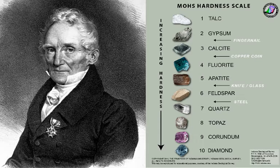Going up the scale, he used gypsum for number two, calcite for number three, fluorite for number four, apatite for number five, six was feldspar, seven is quartz, eight was topaz, nine is corundum, and ten is diamond - the hardest mineral that there is. The softest mineral is talc, number one out of ten. You cannot scratch diamond with any other mineral.